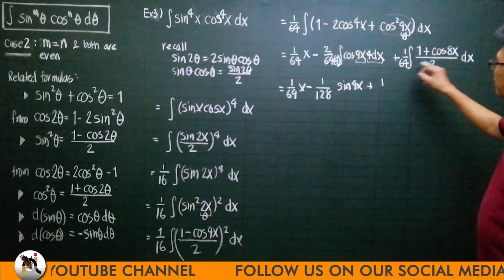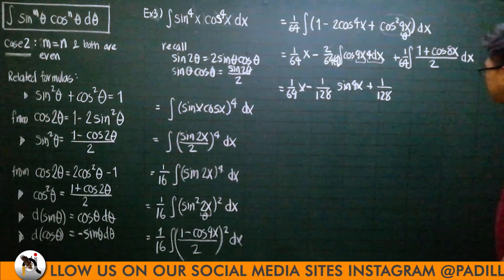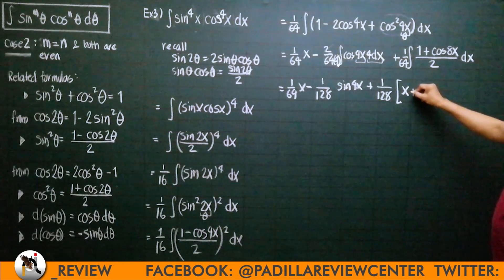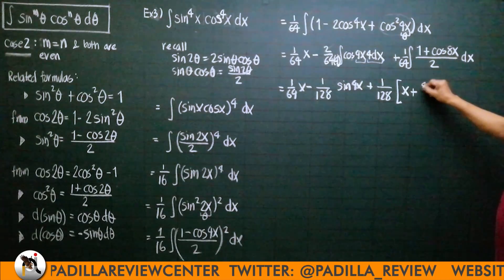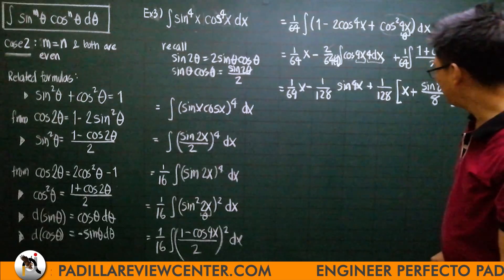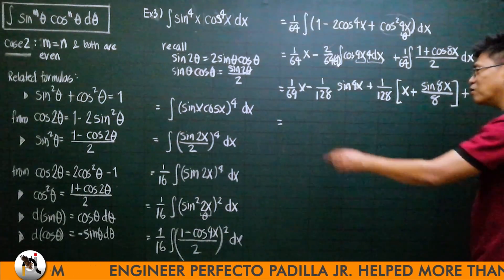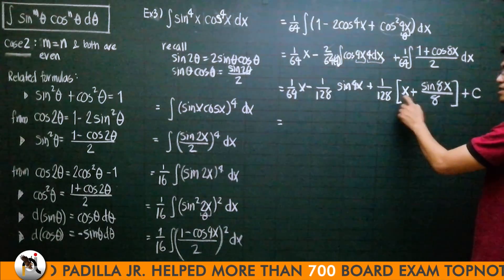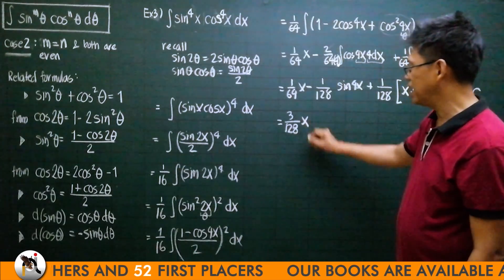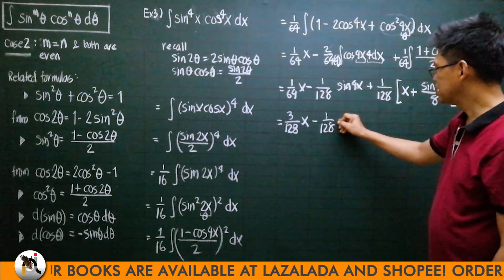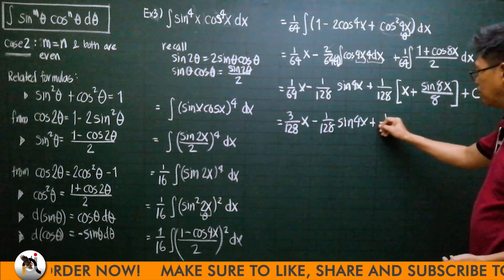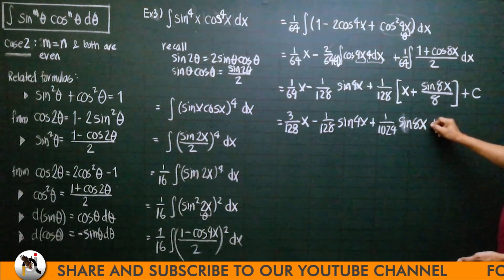Continuing, plus 1/128 times the integral of [1 + cos(8x)/2] dx: the integral of 1 dx = x, and integral of cos(8x) dx = sin(8x)/8. Combining the x terms: 1/64·x + 1/128·x = 2/128·x + 1/128·x = 3/128·x. The final answer is: 3/128·x − 1/128·sin(4x) + 1/1024·sin(8x) + C.